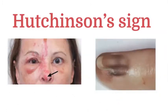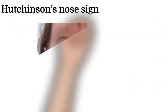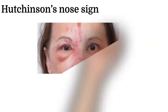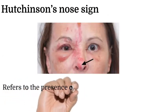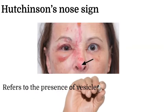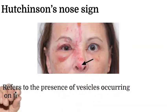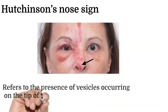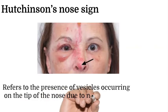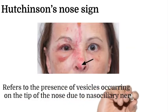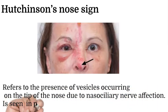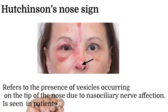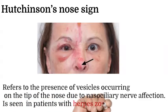Hutchinson's nose sign: this sign refers to the presence of vesicles occurring on the tip of the nose due to affection of the nasal ciliary nerve. This sign is seen in patients with herpes zoster.